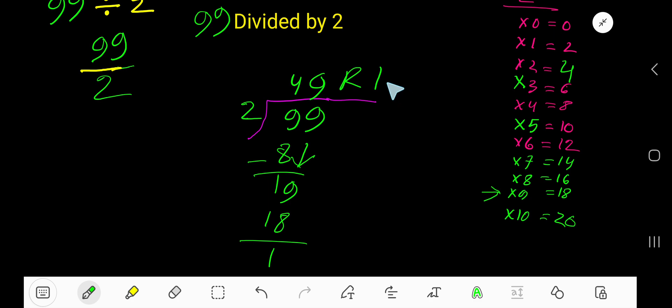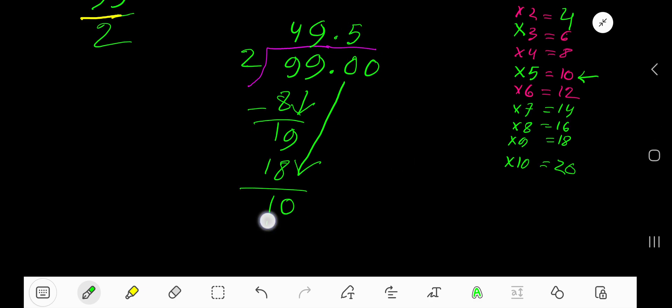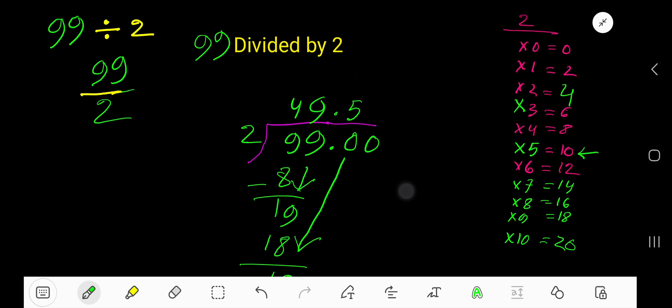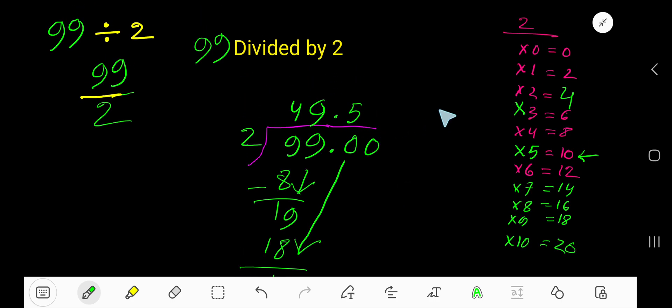But if you want to write your answer in decimal form, just take here a decimal then you are allowed to take any number of zeros. Bring down the first 0. 2 goes into 10 how many times? Look, 5 times. But before the zero there is a decimal, decimal must come to the question directly. Write 5. 5 times 2 is 10. If you subtract you are getting 0. So 49.5 is your answer.